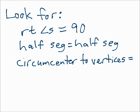When doing questions that involve the perpendicular bisectors, look for these things: if you're talking about one of the right angles, make that measure equal 90. When you have a side cut in half, take one half-segment measure and make it equal to the other half-segment measure. Or maybe you're talking about the measures from the circumcenter to the vertices, and you would need to make those equal. Keep track of all the things that the perpendicular bisectors do, and be prepared to write your equation to solve.